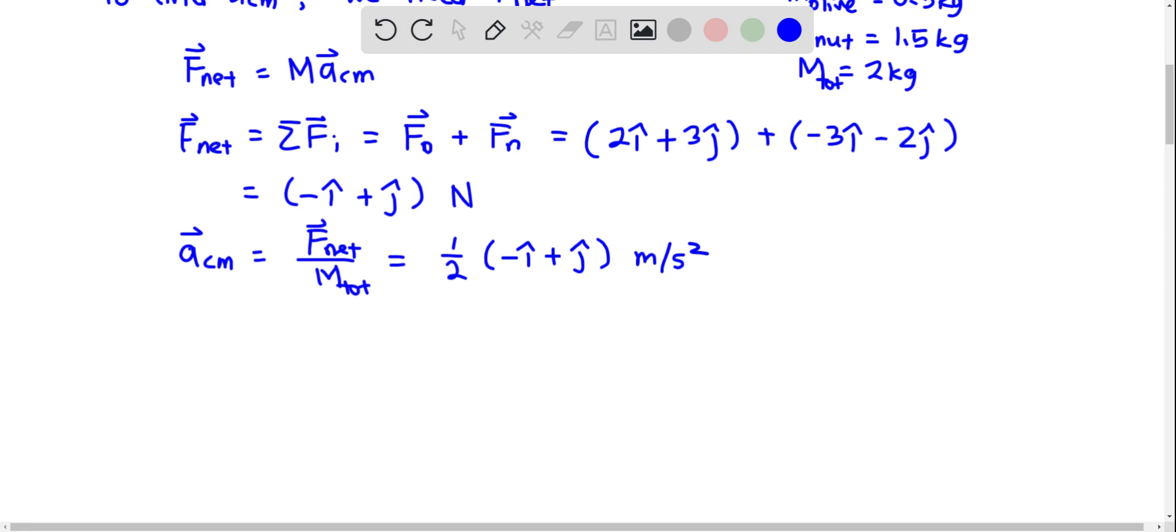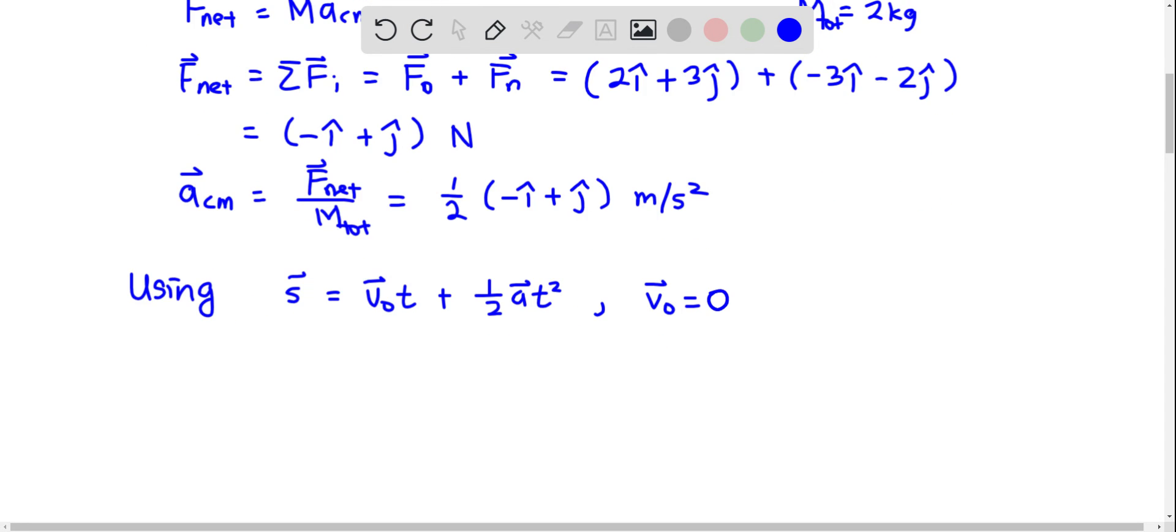And then to find S_CM, we'll be using S equals v0 T plus half A T squared. And we know that v initial is 0, so S_CM is equal to half A_CM T squared.